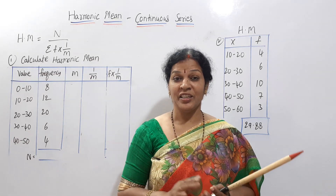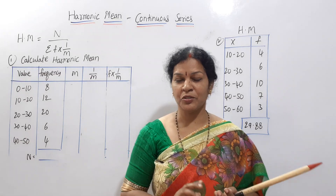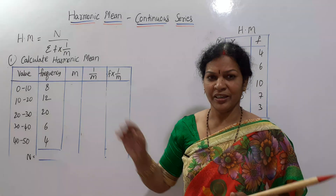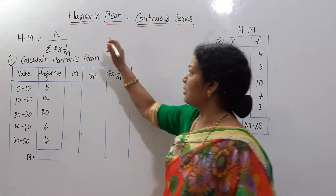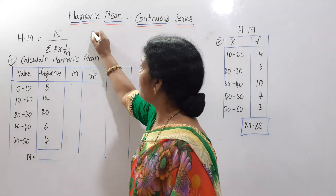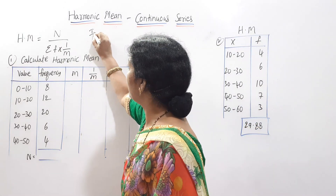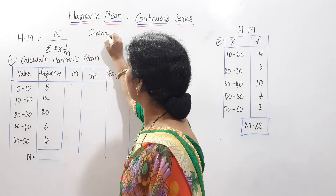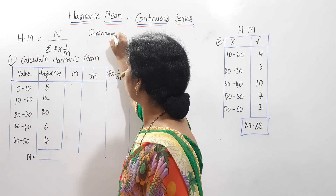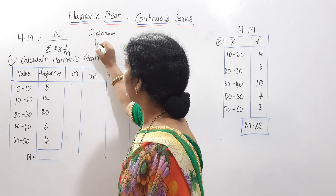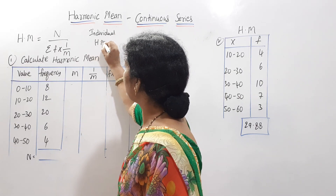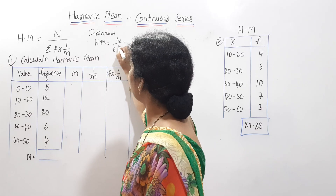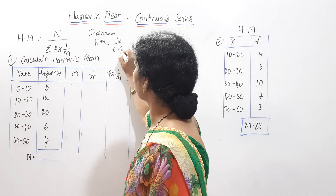Now let's do the continuous series. We are going to have a different formula. The harmonic mean is equal to n by sigma 1 by x.